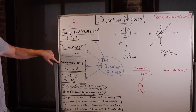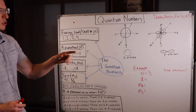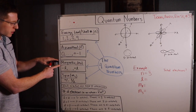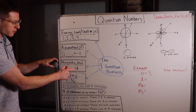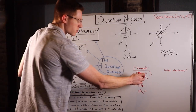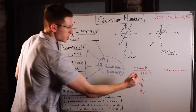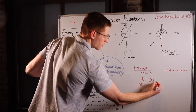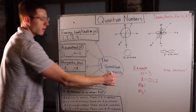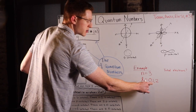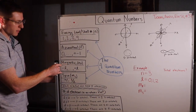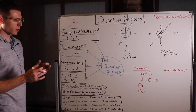Then we have the magnetic number, M sub L. This is like knowing the electron's street number — we're getting even more specific. The way we get the magnetic number is we pick one from negative L to positive L. So if N was 3, we found that L could be 0, 1, or 2. We actually have to pick an L to get our M sub L, because these are three different possible cities the electron could live in, and we need to pick one to get possible street numbers. So let's say we picked L of 2.